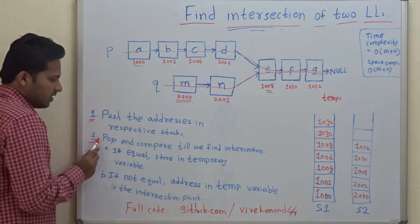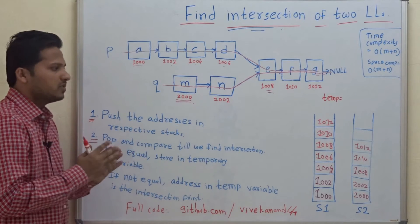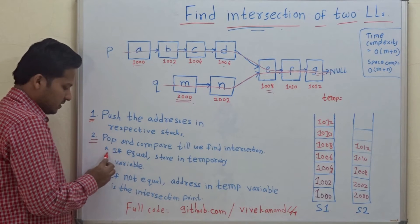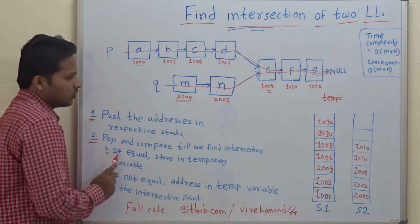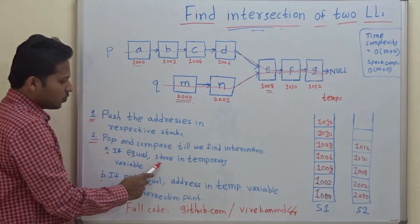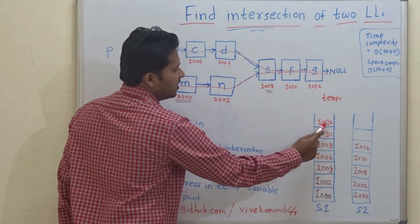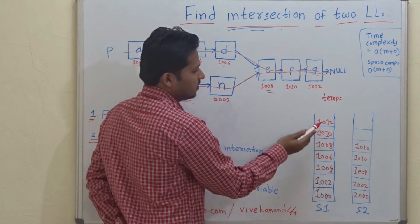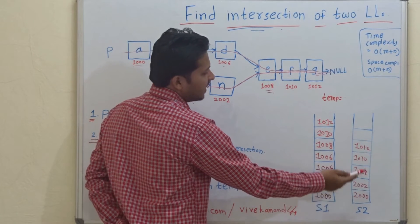The second step says: pop and compare until we find the intersection. We have to pop addresses from the stacks and compare them. If the popped addresses are equal from stack one and stack two, then store them in a temporary variable. So we will pop 1012 from stack one and 1012 from stack two — they are equal.